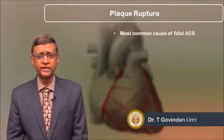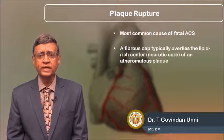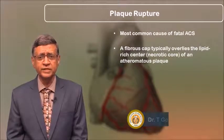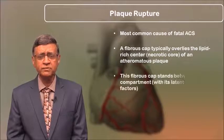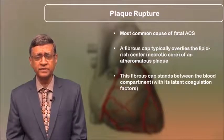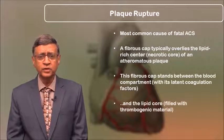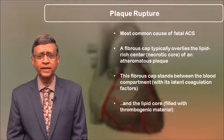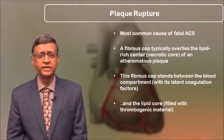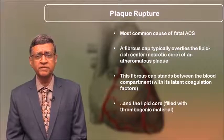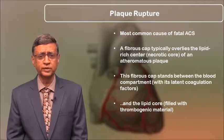This is the most common cause of fatal acute coronary syndrome. The cap that typically overlies the lipid-rich center of an atheromatous plaque is very important because it stands between the blood components with their latent coagulation factors and the thrombogenic lipid core. It is because of the fibrous cap that the blood and lipid core do not come into contact. So when there is any derangement in the fibrous cap, the coagulation factors interact with the thrombogenic material and you get an acute coronary syndrome.